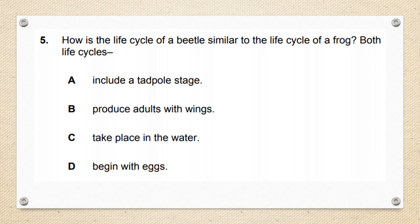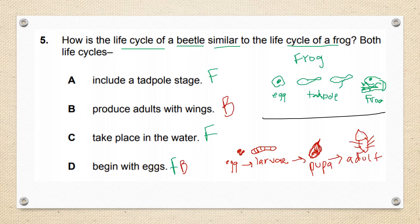Last question — exit ticket. How is the life cycle of a beetle similar to the life cycle of a frog? Both life cycles — A) include a tadpole stage, B) produce adults with wings, C) take place in the water, or D) begin with an egg. The frog goes egg → tadpole → tadpole with legs → frog. The beetle goes egg → larva → pupa → adult. A tadpole stage is just frogs. Adults with wings — that's beetles. Takes place in water — frogs do, but I'm not sure about beetles. Both definitely begin with eggs — no doubt about it. The correct answer is D.